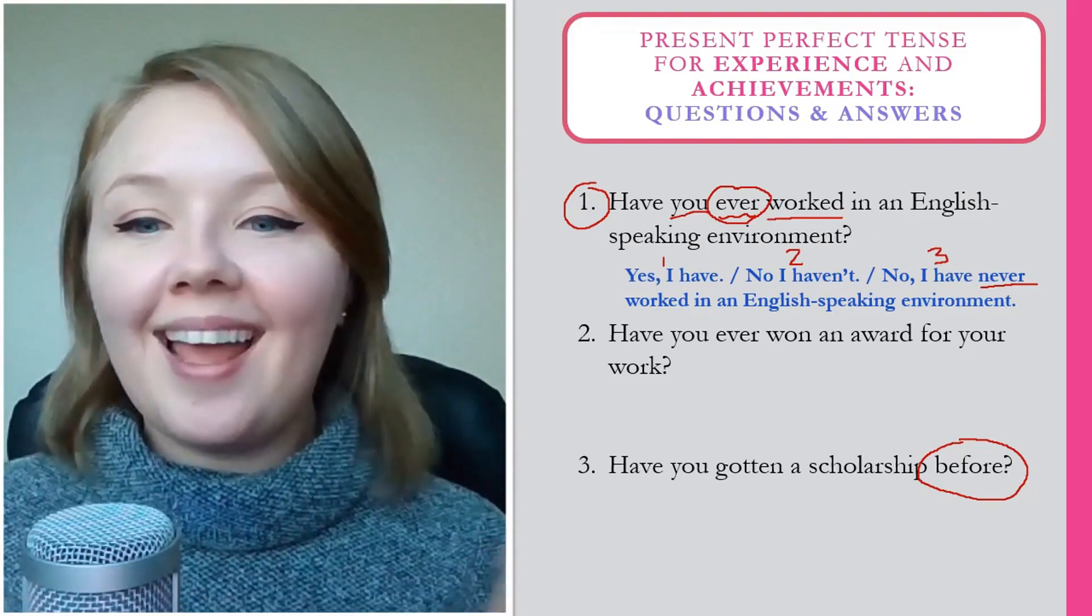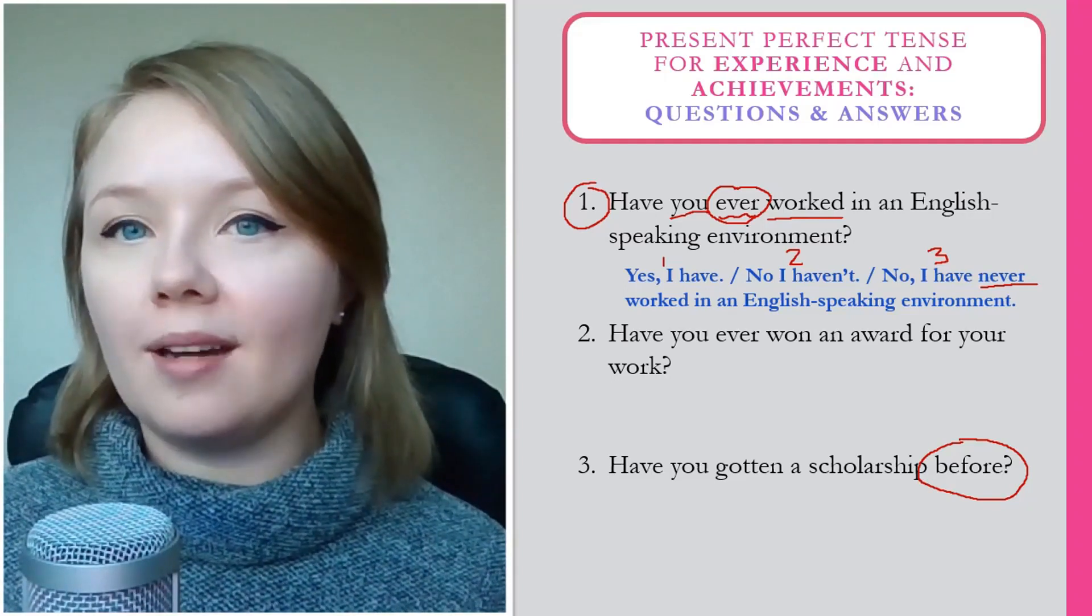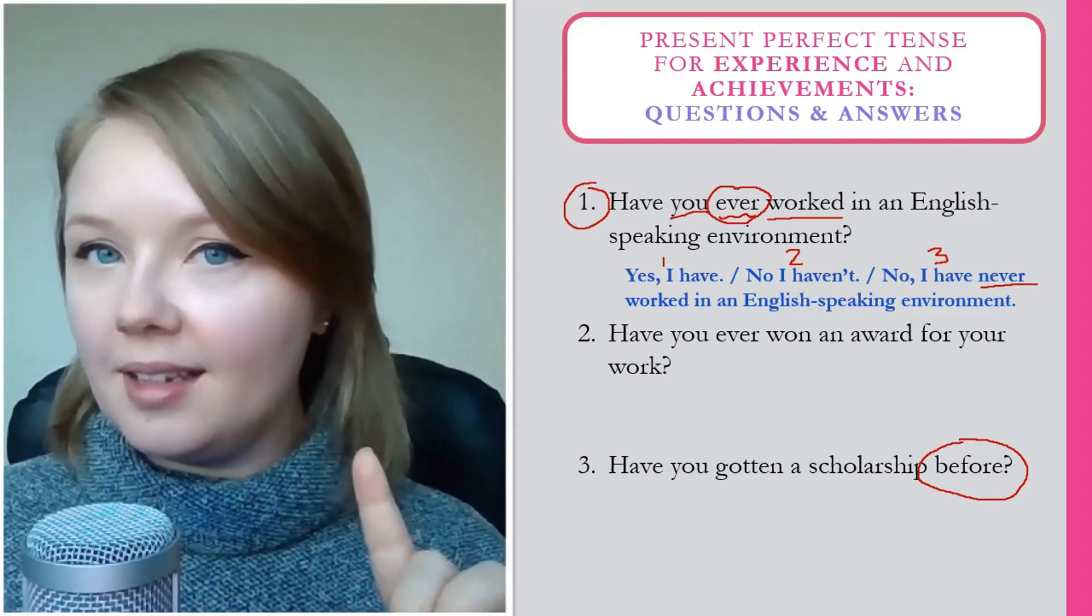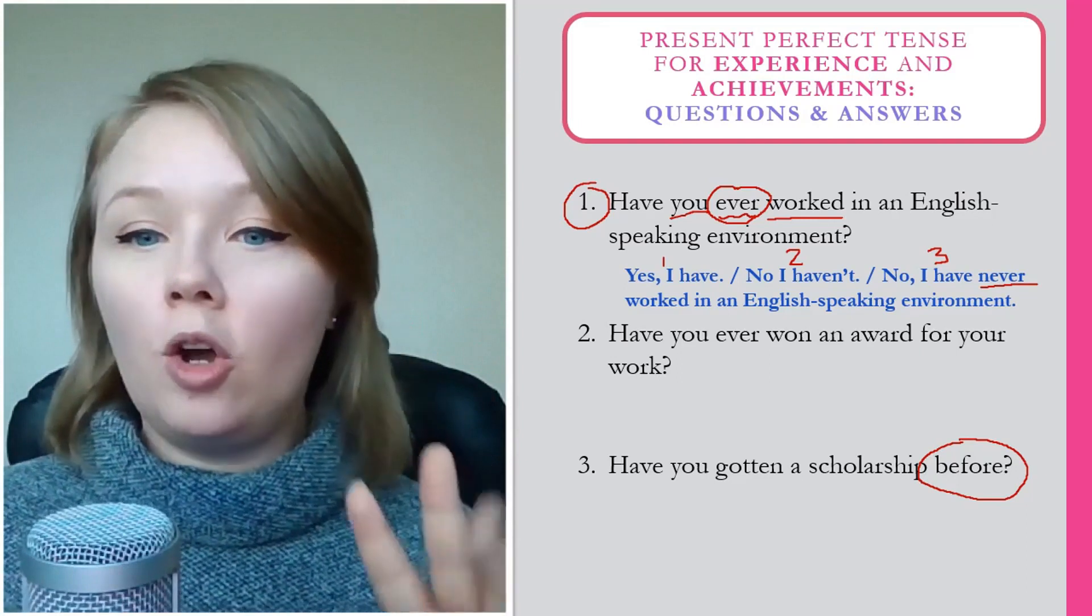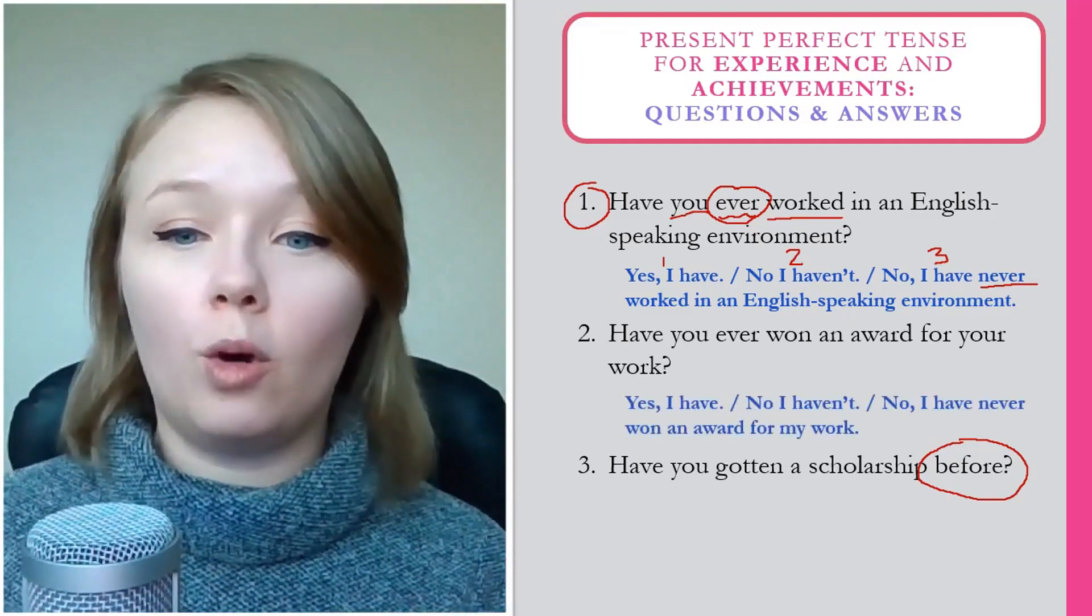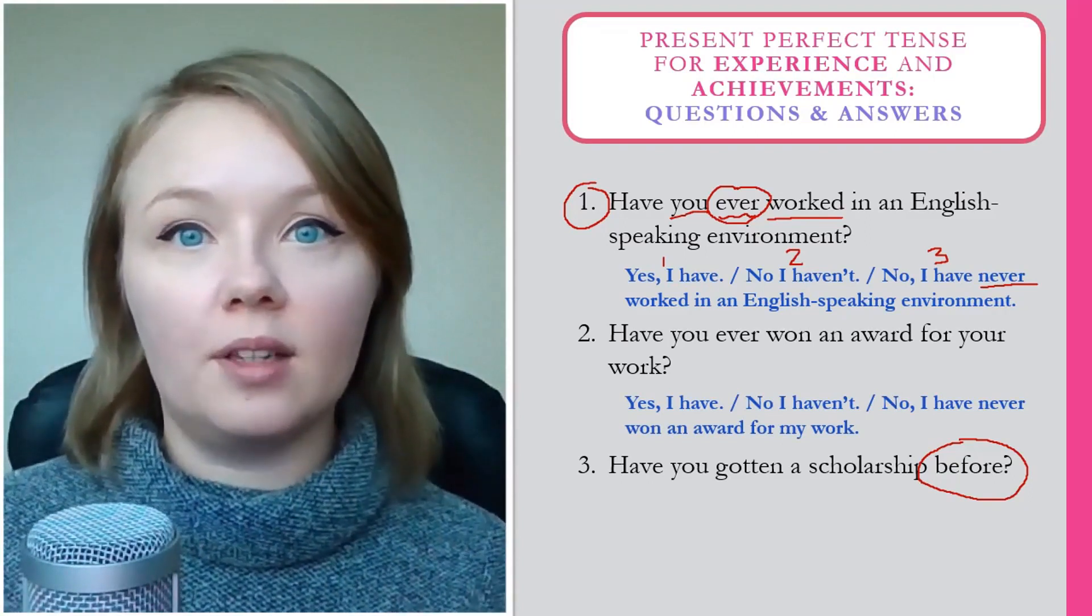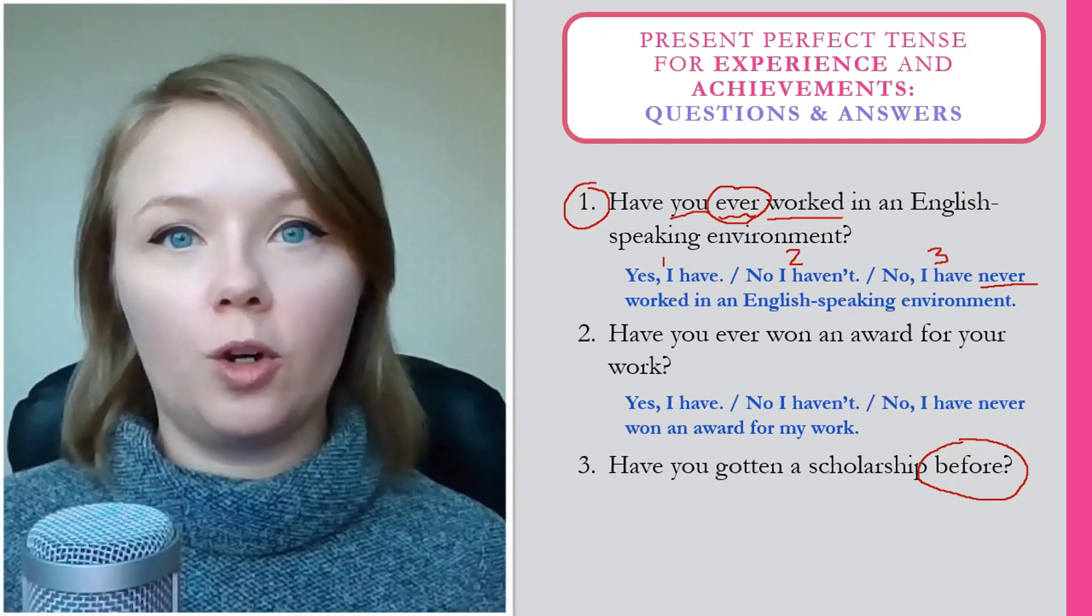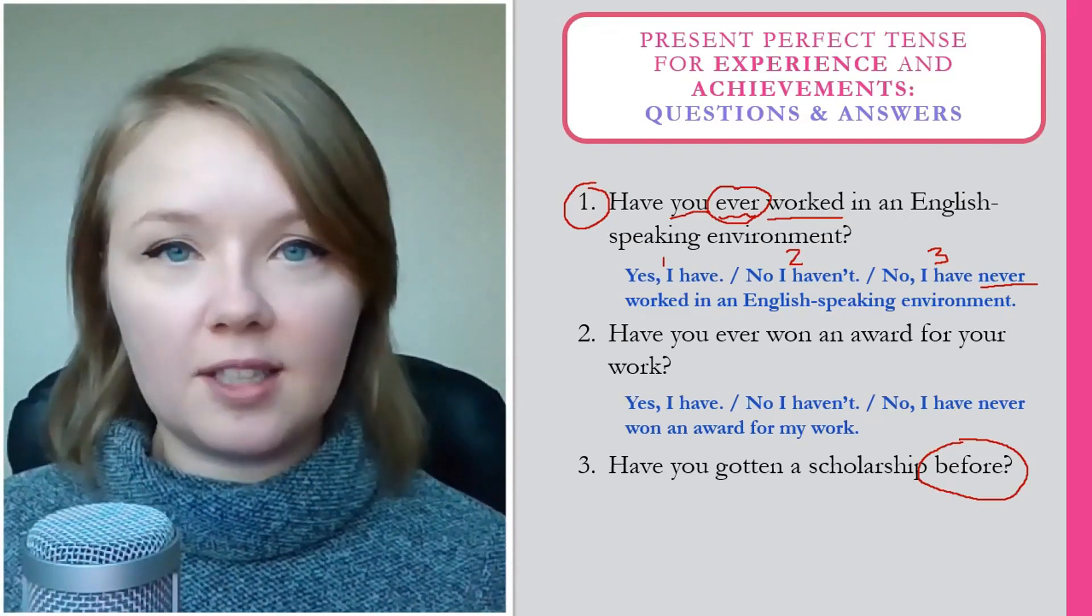Number two, have you ever won an award for your work? Let's look at how we answered number one. Can you try to answer number two in these three ways? We could say, yes, I have. No, I haven't. Or no, I have never won an award for my work. So again, these are the three simple ways we can answer this question. We can always add more detail after. Have you ever won an award for your work? Yes, I have. I won a teaching award in 2016.